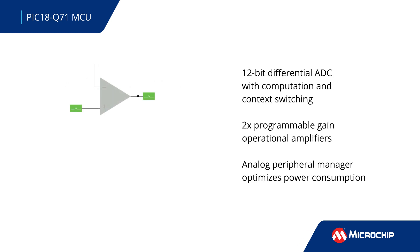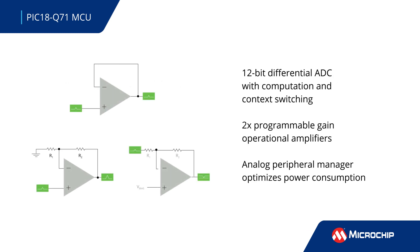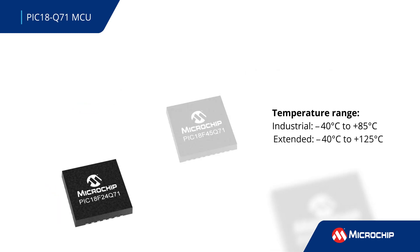PIC-18 Q71 MCUs feature a 12-bit ADC with computation and context switching that allows for easy switching between configurations, plus two programmable gain op-amps for low-level signals and an analog peripheral manager to optimize power consumption by switching analog peripherals on and off using a dedicated timer.